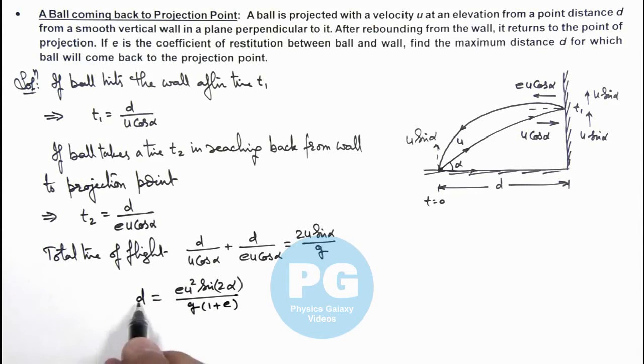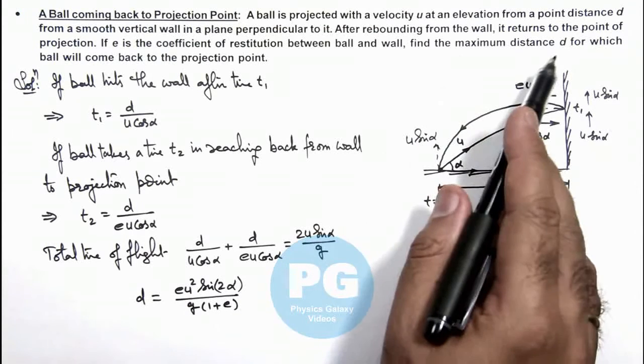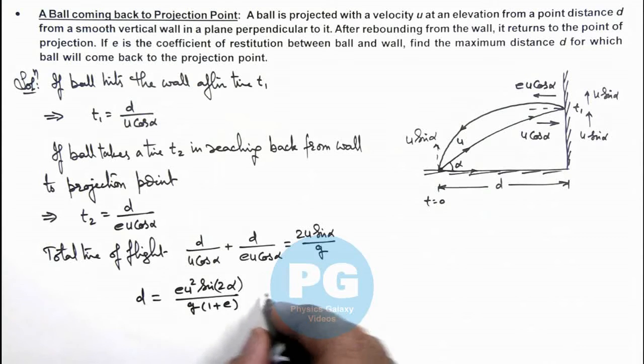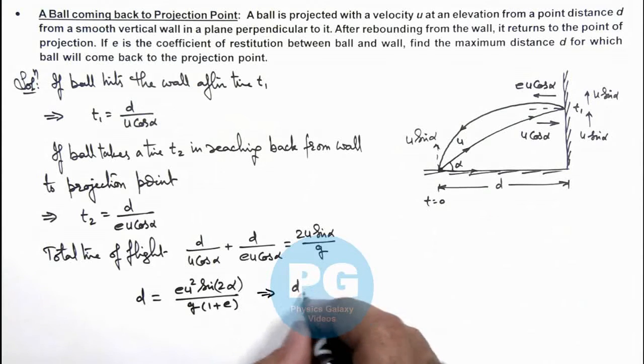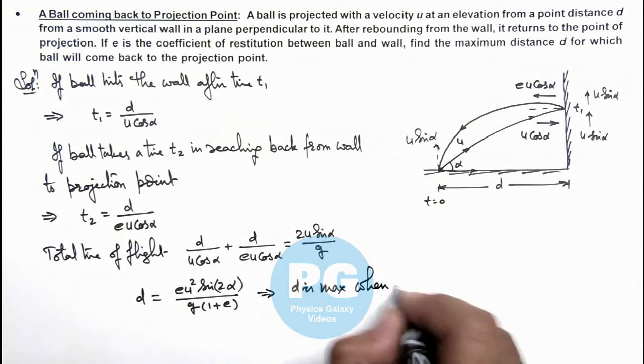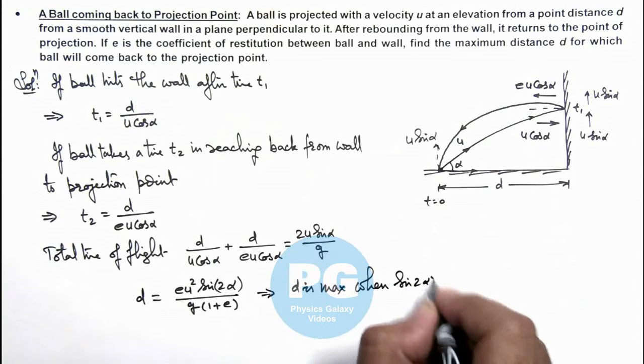So in this situation if this is the value of d we are required to find the maximum distance d for which this will take place. So here we can write, here d is maximum when sin 2 alpha is equal to 1.